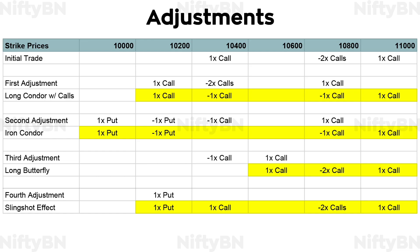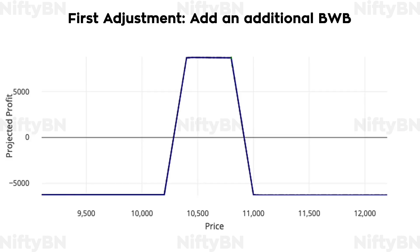Now to adjustments. Say about one week into the trade, Nifty dropped to 10,600. The first adjustment would be to add another broken wing butterfly spread to the tested side, with the lower strike of the original broken butterfly spread as the middle strike and maintaining the same distance between the wings. That is: buy one lot of 30th July 10,200 strike price call; sell two lots of 30th July 10,400 strike price call; buy one lot of 30th July 10,800 strike price call. This would leave us with a condor-with-calls kind of setup. The said adjustment would widen the profit range, but both the profit potential and risk would decrease.